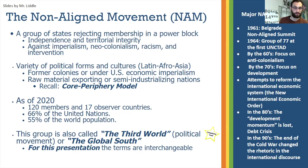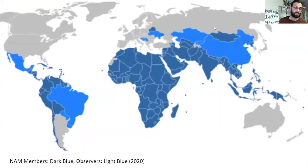Although these terms are technically different things and don't overlap perfectly, for the sake of this presentation we're going to use them interchangeably. If you're really curious, I'd encourage you to do a little research on your own. As you can see from the map, the current members of NAM are in dark blue — that's almost all of Africa, large chunks of Latin America, as well as South and Southeast Asia and the Middle East.